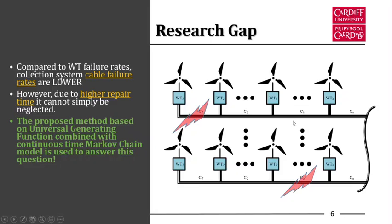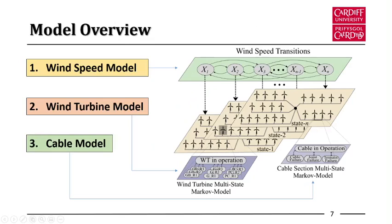We proposed the technique called Universal Generation Function to address this issue. Next I will discuss the internal layout of the model. As you can see in the diagram, there are three layers: the wind speed model, the wind turbine model, and the cable network model.